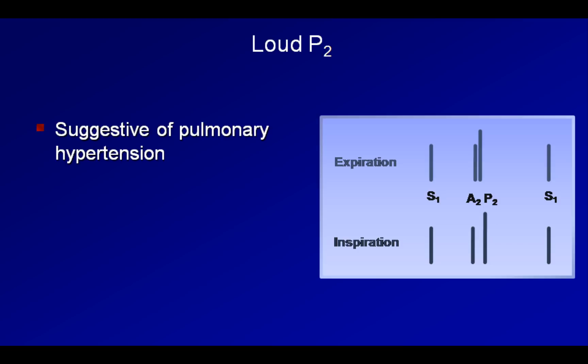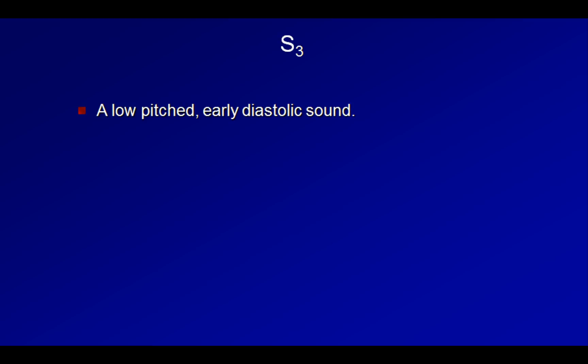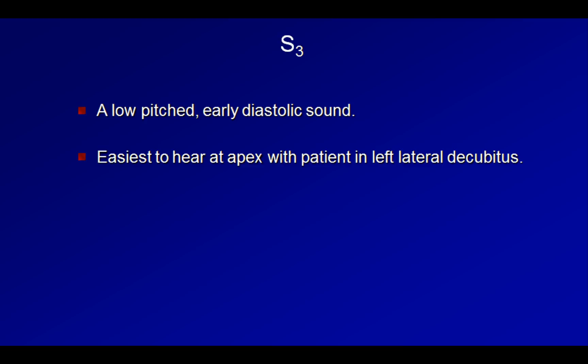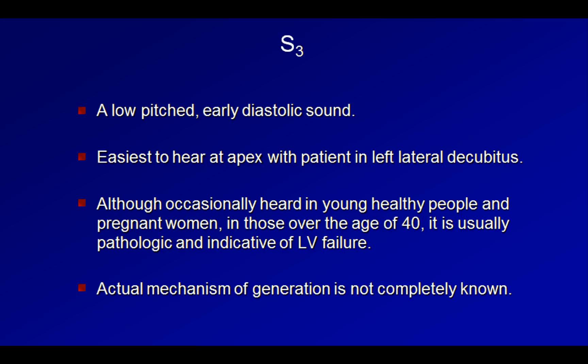At this point, I'm going to shift from talking about abnormal variants of the normal heart sounds to talking about sounds whose very existence is considered abnormal. The first and most important in this category is the third heart sound, usually called the S3. The S3 is a low-pitched, early diastolic sound. It is easiest to hear at the apex, with the patient in the left lateral decubitus position. Although it is occasionally heard in young healthy people and pregnant women, in those over the age of 40 it is usually pathologic and indicative of left ventricular failure. The actual mechanism by which a pathologic S3 is generated is not completely known, but is probably related to an abrupt deceleration of blood as it attempts to fill a failing ventricle, resulting in vibration of the ventricular walls. Here's a schematic and audio clip of how S3 relates to the other auscultatory components of the heart.